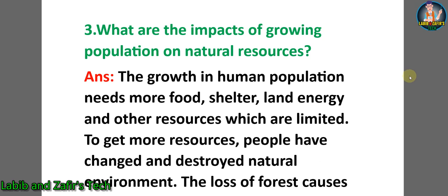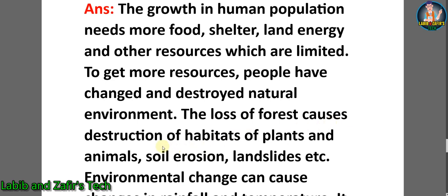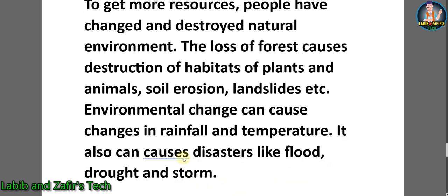The third question: what are the impacts of growing population on natural resources? Answer: the growth in human population needs more food, shelter, land, energy, and other resources which are limited. To get more resources, people have changed and destroyed the natural environment. The loss of forest causes destruction of habitats of plants and animals, soil erosion, and landslides. Environmental change can cause changes in rainfall and temperature, and can also cause disasters like floods, drought, and storm.